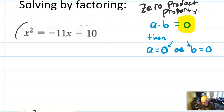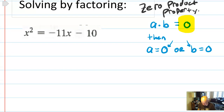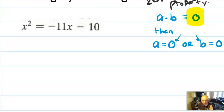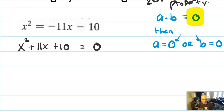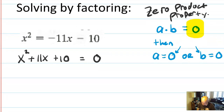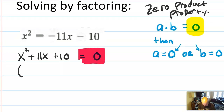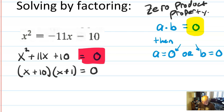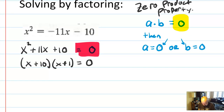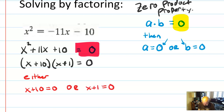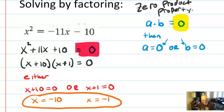It's not valid to split up a factored equation right away unless it equals zero. First, get everything equal to zero. Add 11x and 10 to both sides. Now that you have x² + 11x + 10 = 0, you can use the zero product property. Factor this out as (x + 10)(x + 1) = 0. Either x + 10 = 0 or x + 1 = 0, giving x = −10 or x = −1. That's how you solve a quadratic by factoring.